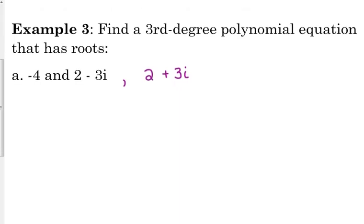Now, we're going to use the same kind of methods that we used yesterday, but when we do this, now we have these imaginary numbers in there, so we've got to be careful. We know that a root of negative 4 is going to be x plus 4. That part's easy.